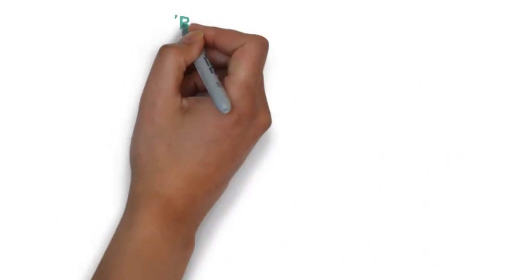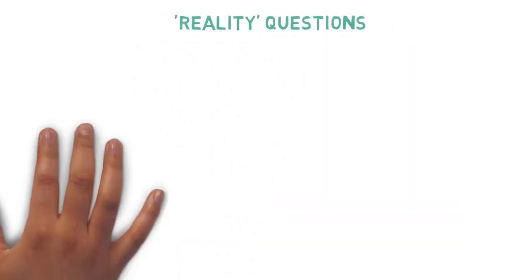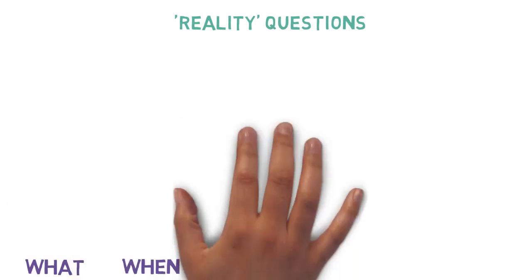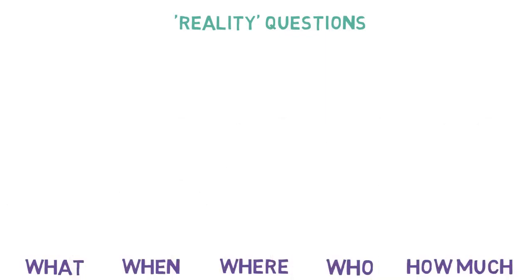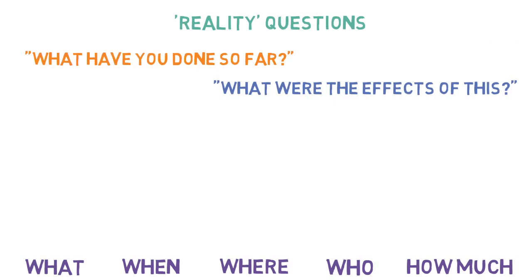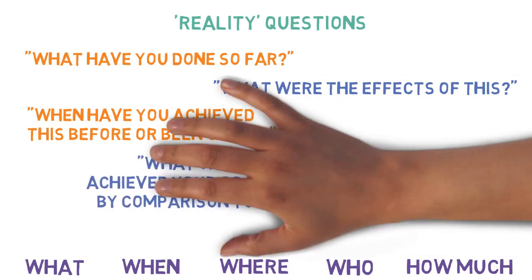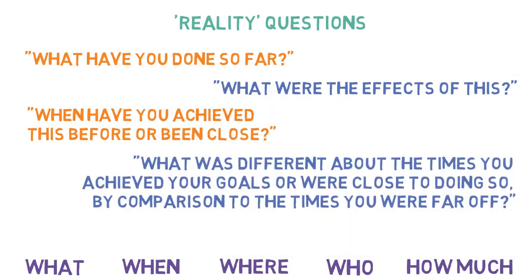Quite often, questions asked at this point in the process will be specific and begin with words such as what, when, where, who, and how much. For example: What have you done so far and what were the effects of this? When have you achieved this before or been close? What was different about the times you achieved your goals or were close to doing so, by comparison to the times you were far off? Or, what might have to change?